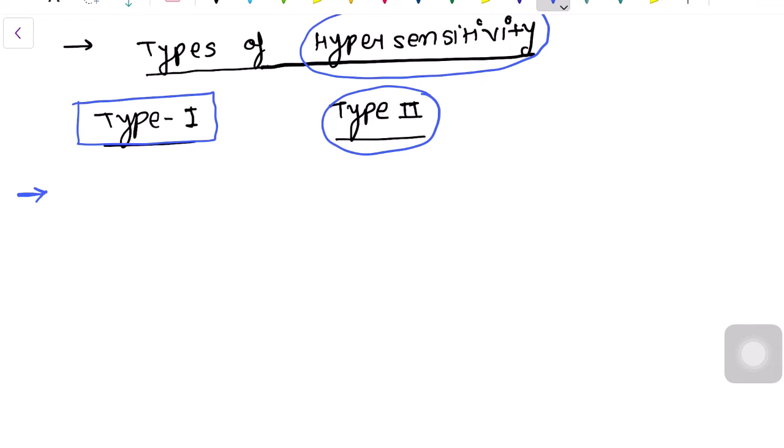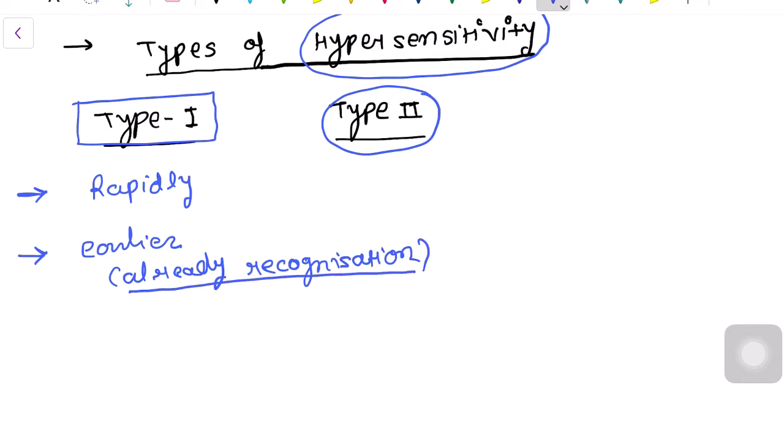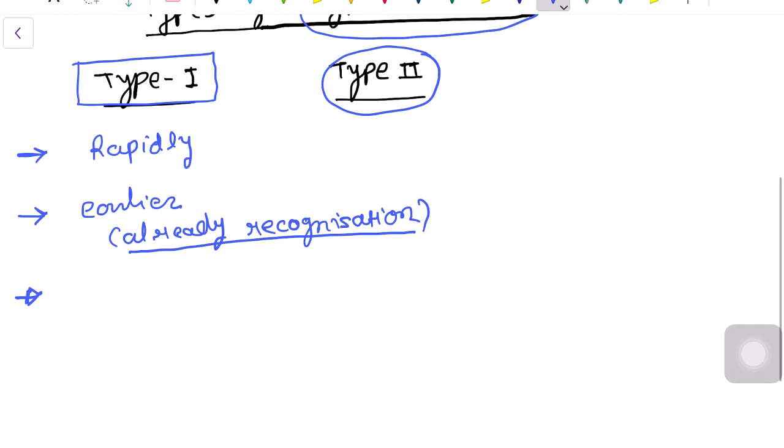Type 1 hypersensitivity reaction is a rapidly developing reaction when the antigen or pathogen has been earlier recognized. Just like if you dislike a person and that person comes in front of you, you already know that person is harmful to you, and you immediately react.